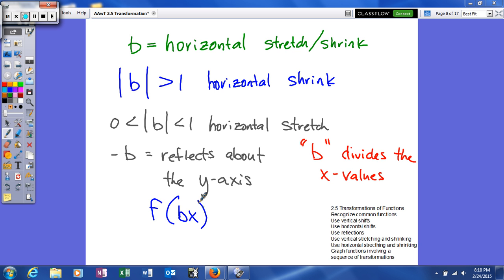So, in your function, it'll look like this. It'll be the coefficient of x before you do the principal function. So, b divides the x value. Remember, A and D had a direct effect on the y value, where b and C will have an inverse effect to the x's. So, keep that in mind, and we'll look at an example.